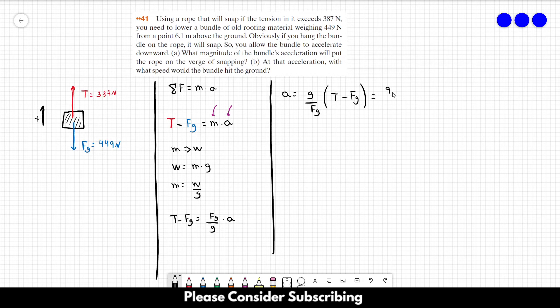So G is 9.8. We have that the weight or the force of gravity is equal to 449 times the tension, which is equal to 387 minus 449. So if you do this calculation, you would find roughly minus 1.4 meters per square second, which means that the bundle is accelerating downwards. So that's the acceleration that the bundle is falling. That's the answer of letter A as well.